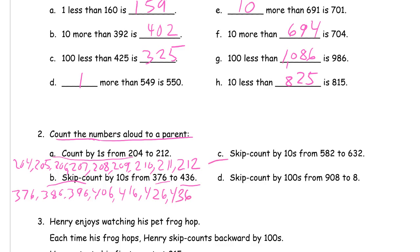Then we're skip counting by tens from 582 to 632: 582, 592, 602, 612, 622, 632.